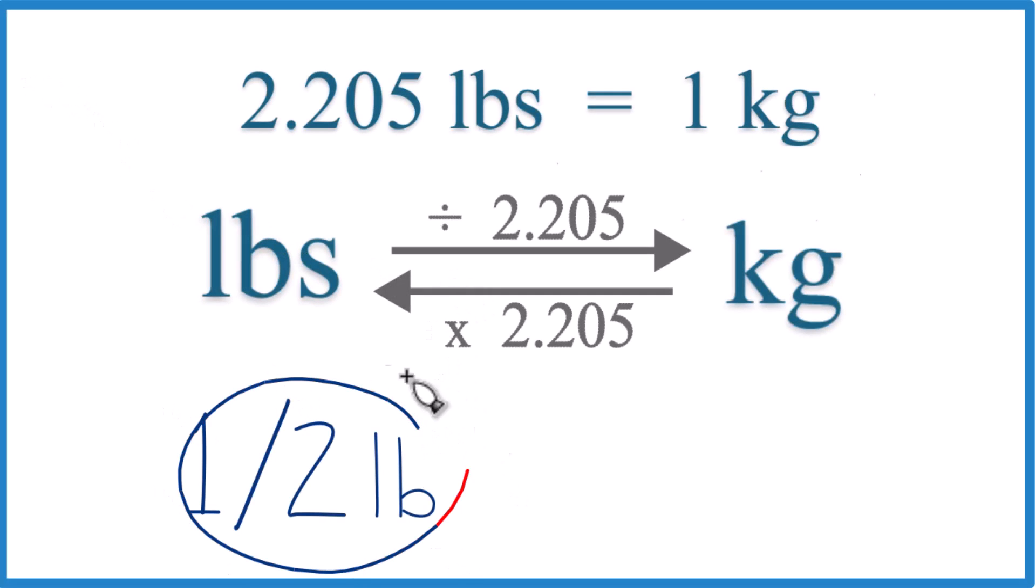Let's convert one-half of a pound to kilograms, and here's how you do it. Probably first off, the easiest thing to do is to get this to a decimal, because one-half, that's just 0.5.